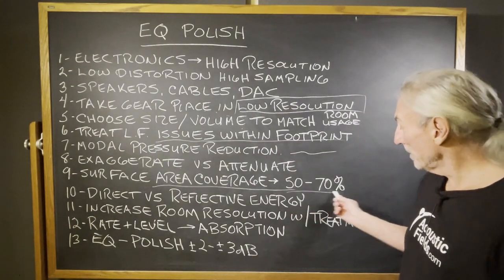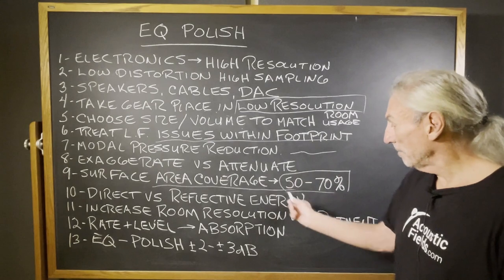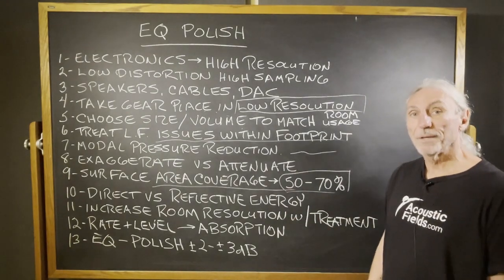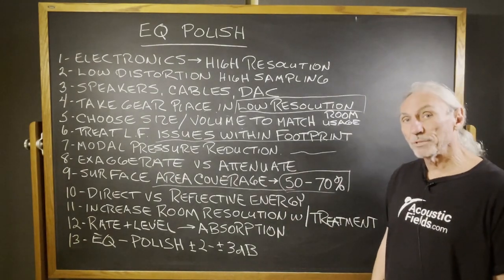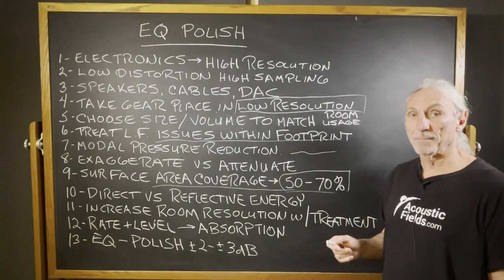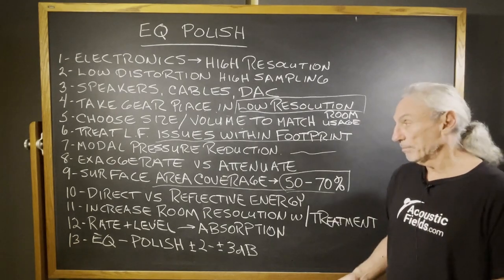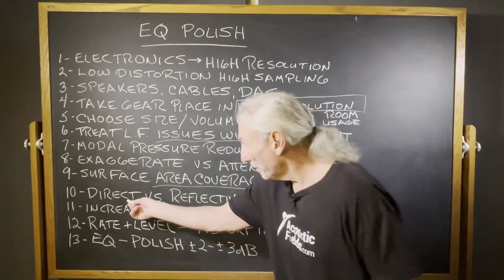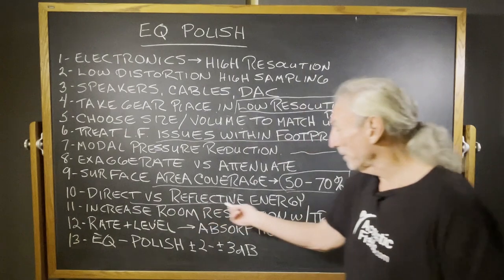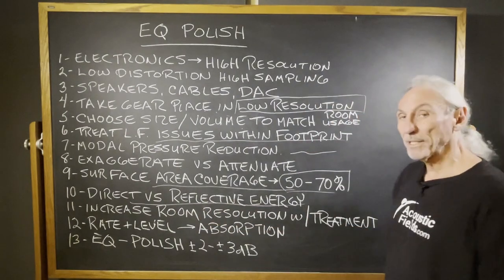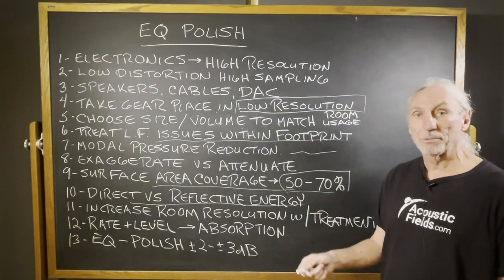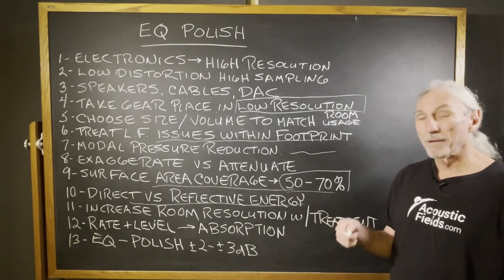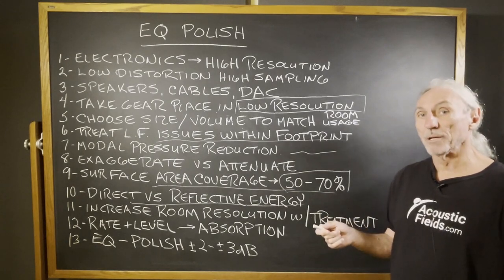Coverage range: 50 to 70 percent in most cases. That's what you have to do when you have bad dimensions to start with — you have to create a new room. We also have to balance the direct versus the reflected energy. In mixing rooms and listening rooms, we have two channels, even in multiple channel rooms.